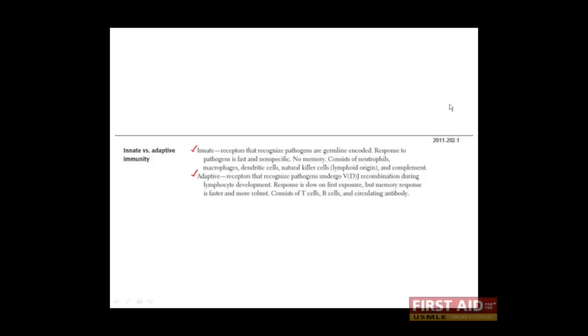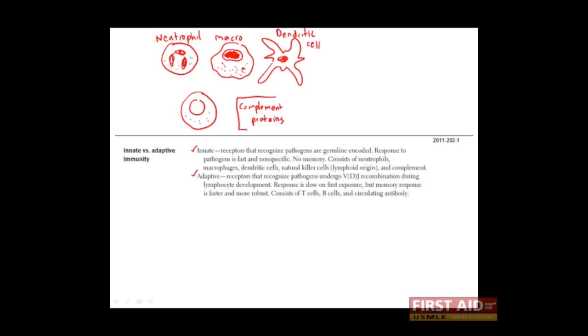So what are the innate immune cells? These are the innate immune cells. They include neutrophils, macrophages, dendritic cells, NK cells, and also a set of proteins known as complement proteins, which are produced by the liver.